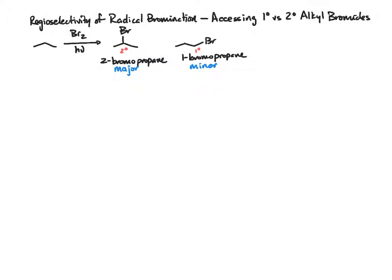So what do we do if we want to generate the primary alkyl bromide? To do that, we're going to look at a separate set of conditions that are different from using molecular bromine and light.